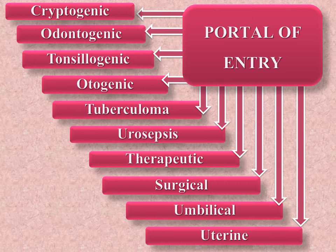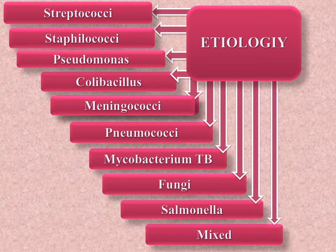This slide shows the ten most frequent etiological factors of sepsis. The first four bacteria — streptococci, staphylococci, Pseudomonas, and Escherichia coli — are much more frequent causal factors of sepsis.